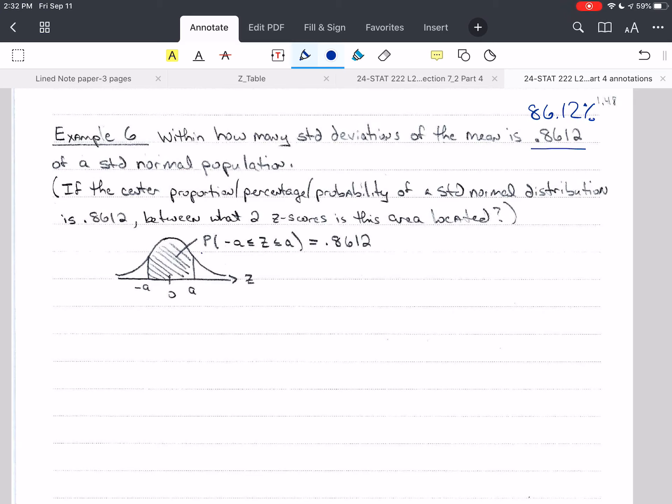So for this, we're saying the probability that z is between negative a and positive a. So why did I choose negative a and positive a? Because I said that this was in the center, or within how many standard deviations that's implying in the center of the distribution. So we can use symmetry. That's the only way we can really solve this problem.